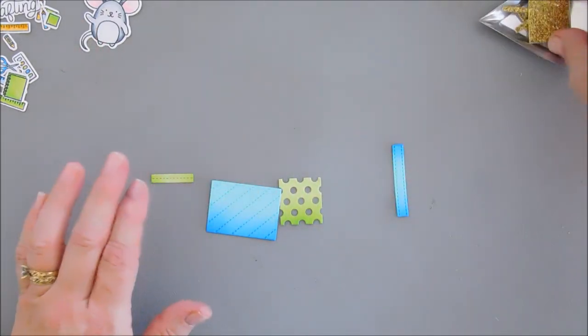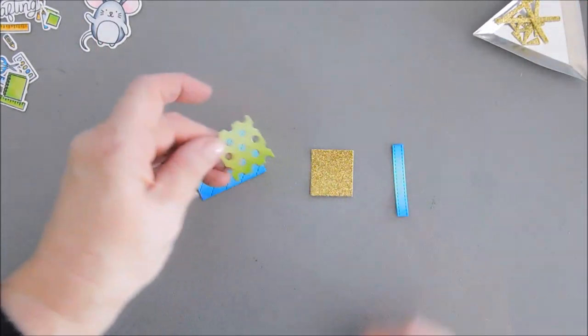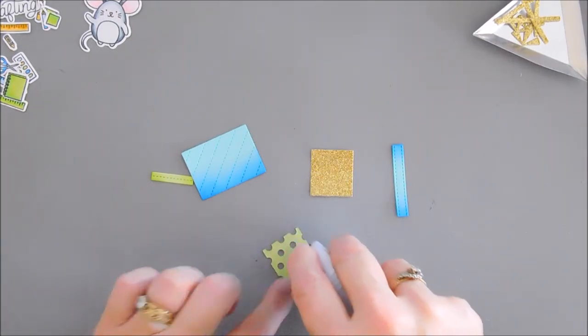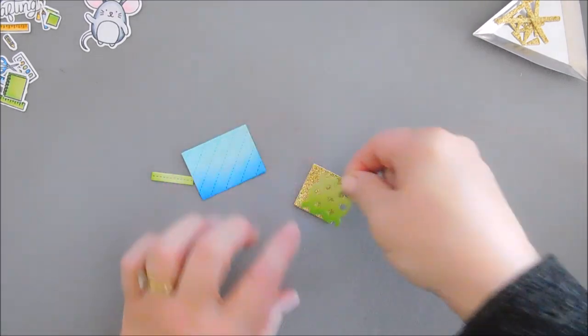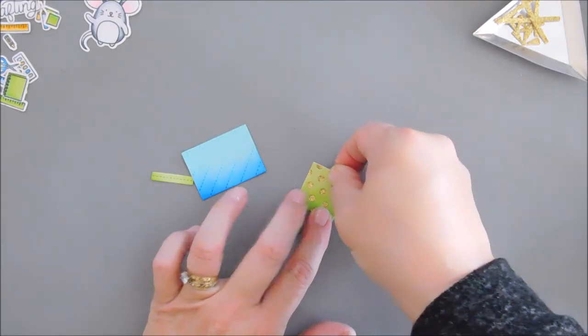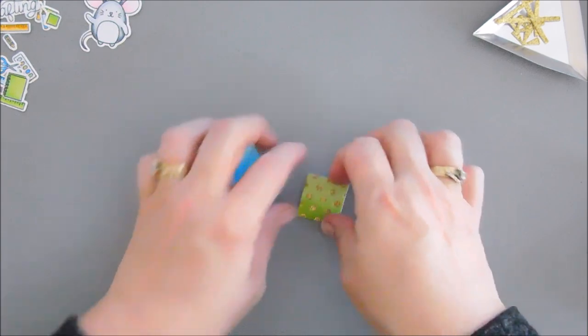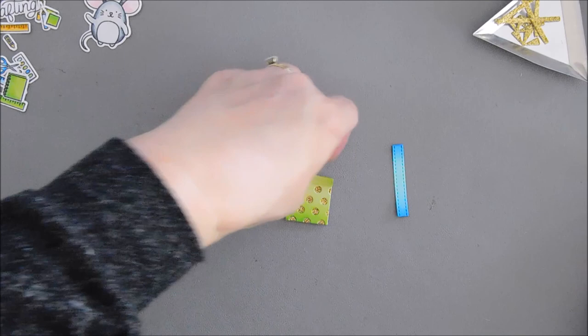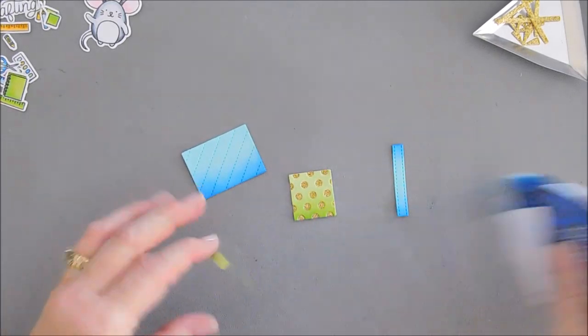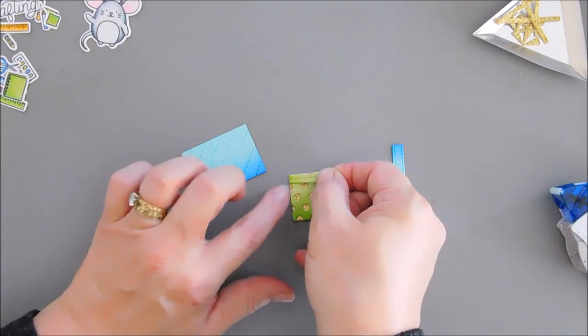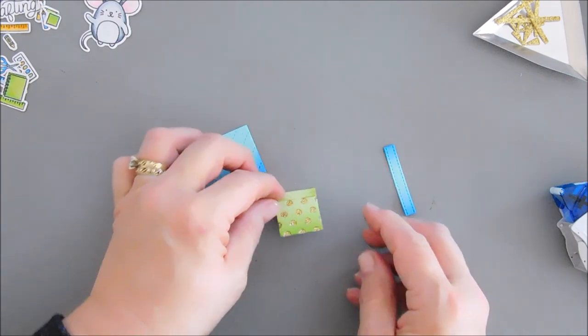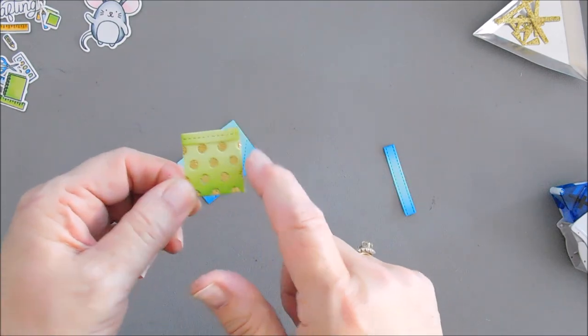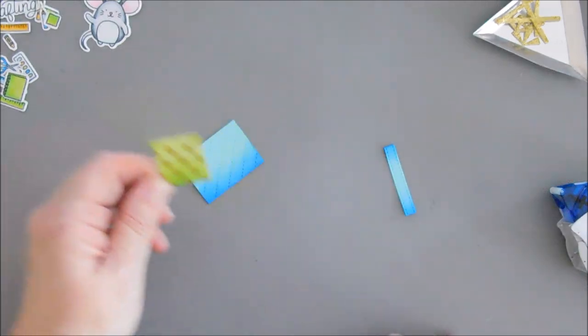Now we can adhere our presents. I'm going to go ahead and flip over my polka dots. Just using my tape runner, I'm going to add some adhesive. And then we will layer this on top of our gift here. And then this piece, I'm going to go ahead and add some adhesive behind. And we're going to layer this right on the top of our present. This is going to close the lid of our gift.